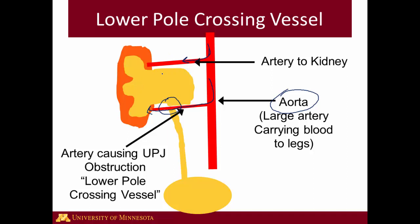Essentially what's happening is the artery is laying on the ureter and compressing it, making it hard for urine to get down the ureter. So even though the caliber of the ureter may be normal and it may have a normal opening, because of the compression from the lower pole crossing vessel, the urine is not able to make it down to the bladder. This has the same effect — it causes blockage, the urine is not able to make it down, and pushes out and causes dilation or hydronephrosis.